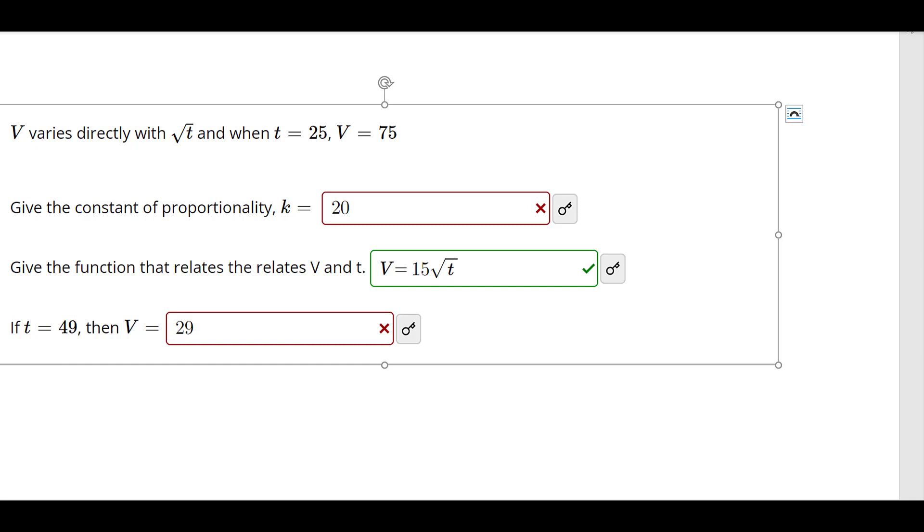In this problem, we're doing direct variation, so that says V varies directly as the square root of t, so that tells us V equals k times the square root of t.